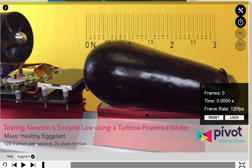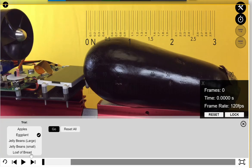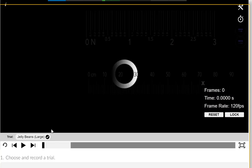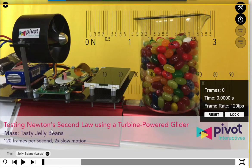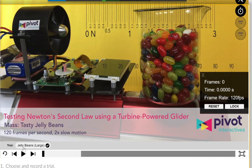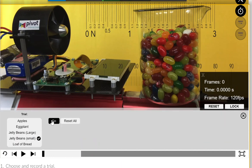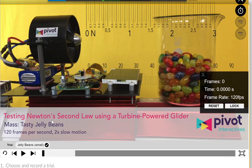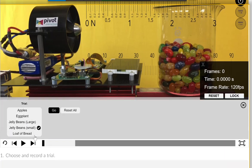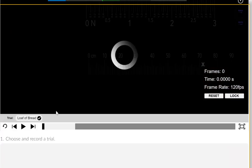What I want you to do in your groups is to do this for all of the payloads. Apples, an eggplant, a big eggplant. I'm curious if the jelly beans are large or if the amount of jelly beans is large. Those look like normal sized jelly beans. Maybe it's the amount of jelly beans? Yeah, so amount of jelly beans, not the size of the jelly beans. And then a loaf of bread.